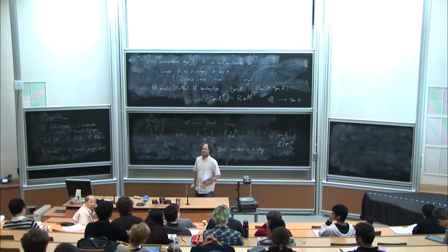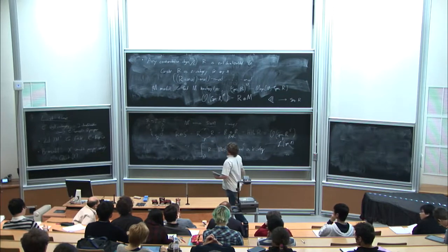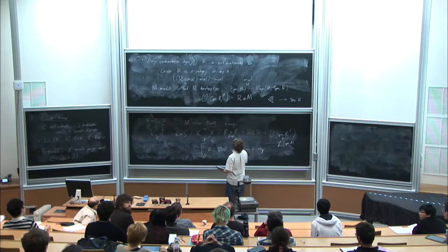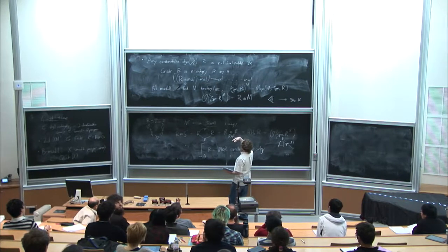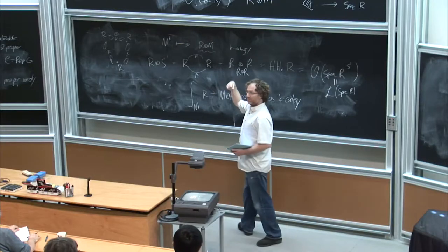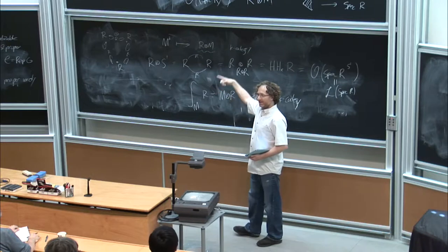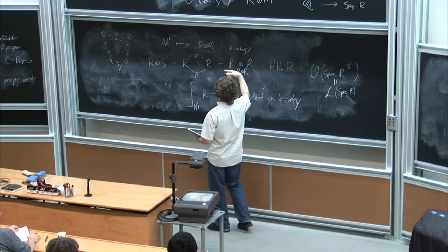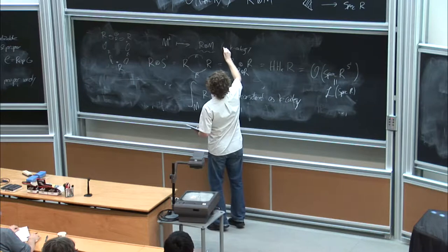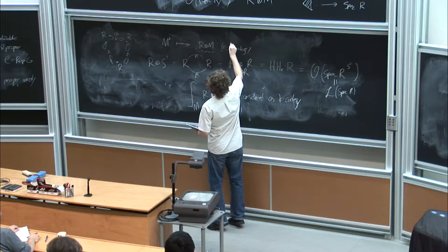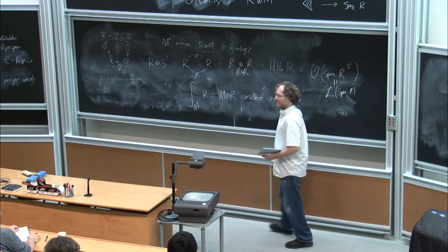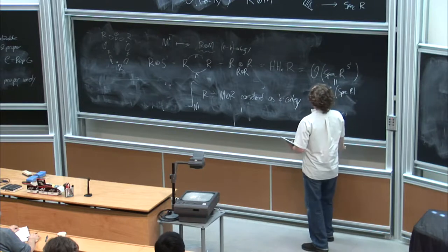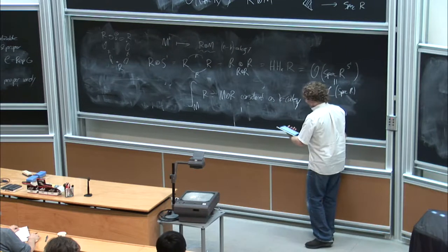If I have an N-manifold, I want to attach to it a vector space. I'm never getting numbers out of this construction. To an N-manifold, I get a vector space. So that's the construction.